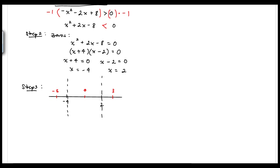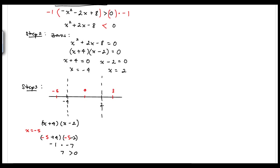I'll take the inequality in factored form: (x + 4)(x − 2). Plugging in x equals negative 5, we get (negative 5 + 4)(negative 5 − 2) = (negative 1)(negative 7) = positive 7, which is greater than zero. So we get positive values to the left of negative 4.